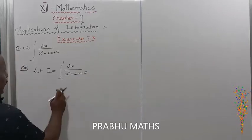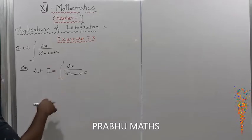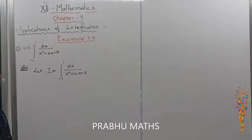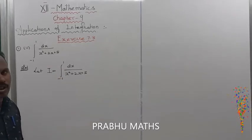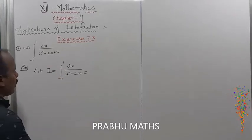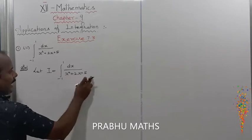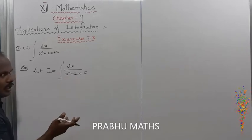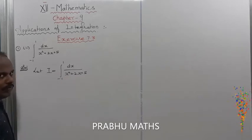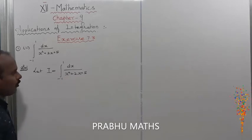First, check the limits minus 1 to plus 1 — check whether this is an even function or an odd function. Since it is neither even nor odd, we go ahead and convert it to another form.